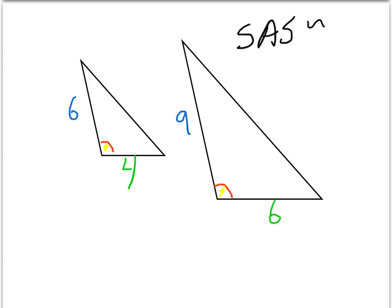To verify that the sides are proportional, we check: the shortest side of the small triangle is 4, and the shortest side of the large triangle is 6. Does that equal the longer side of the small triangle, 6, divided by the longer side of the big triangle, 9? Four divided by 6 simplifies to 2/3, and 6/9 also simplifies to 2/3. So the sides are indeed proportional, and therefore these two triangles are indeed similar by SAS similarity.